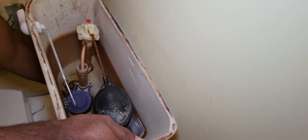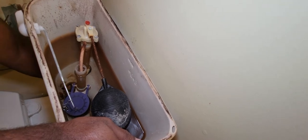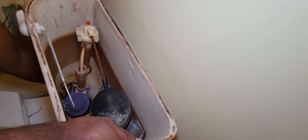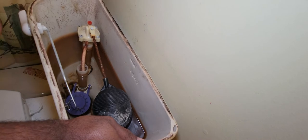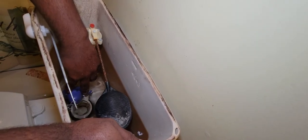There'll be a valve on the side of the toilet, so you cut it off. Next thing you want to do is drain the storage tank.